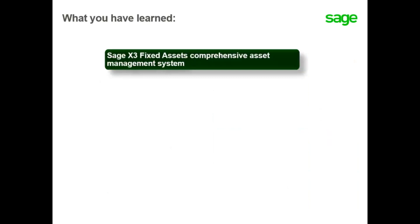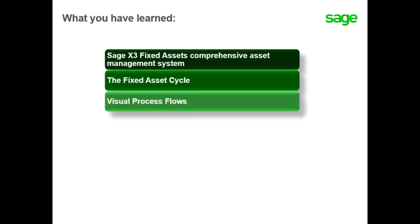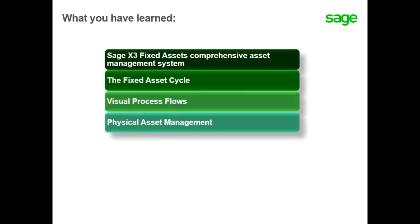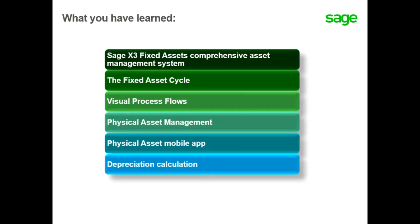In this topic, you have learned about Sage X3 Fixed Assets comprehensive asset management system. You also learned the fixed asset cycle that allows you to manage assets from procurement through the end of the asset's life. You have predefined physical process flows that contain all the necessary steps for entering and tracking your assets, and features allowing depreciation calculation simulation as well as generating accounting entries for the period and the fiscal year end.